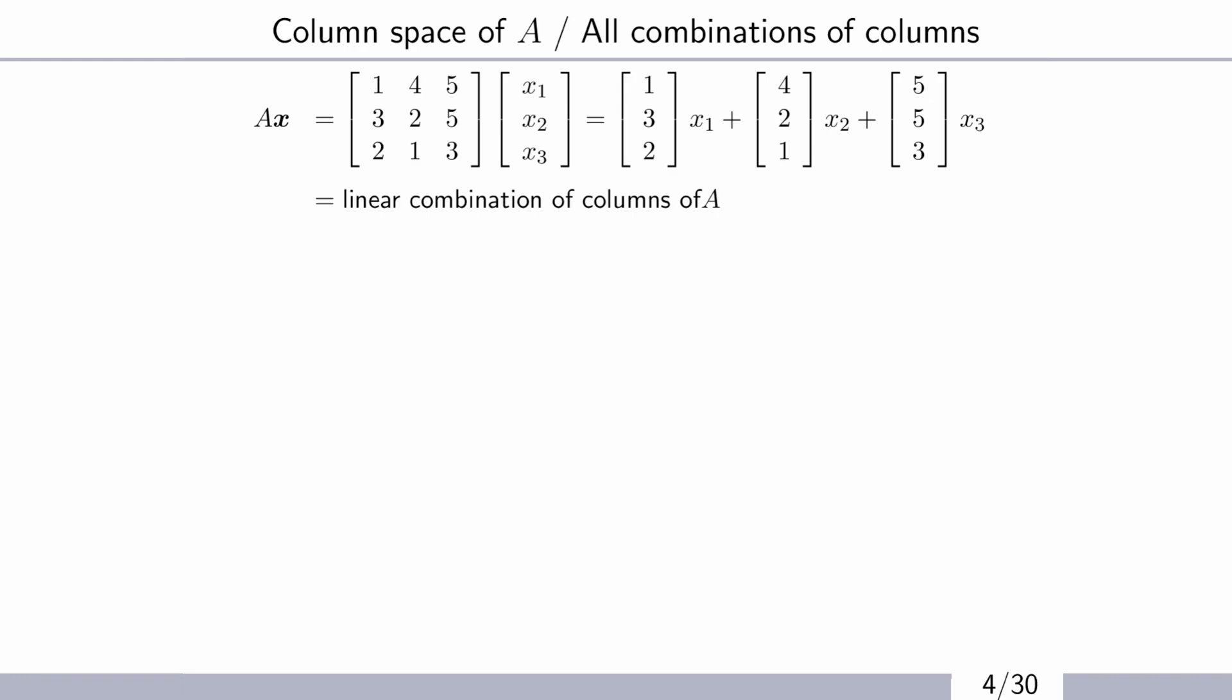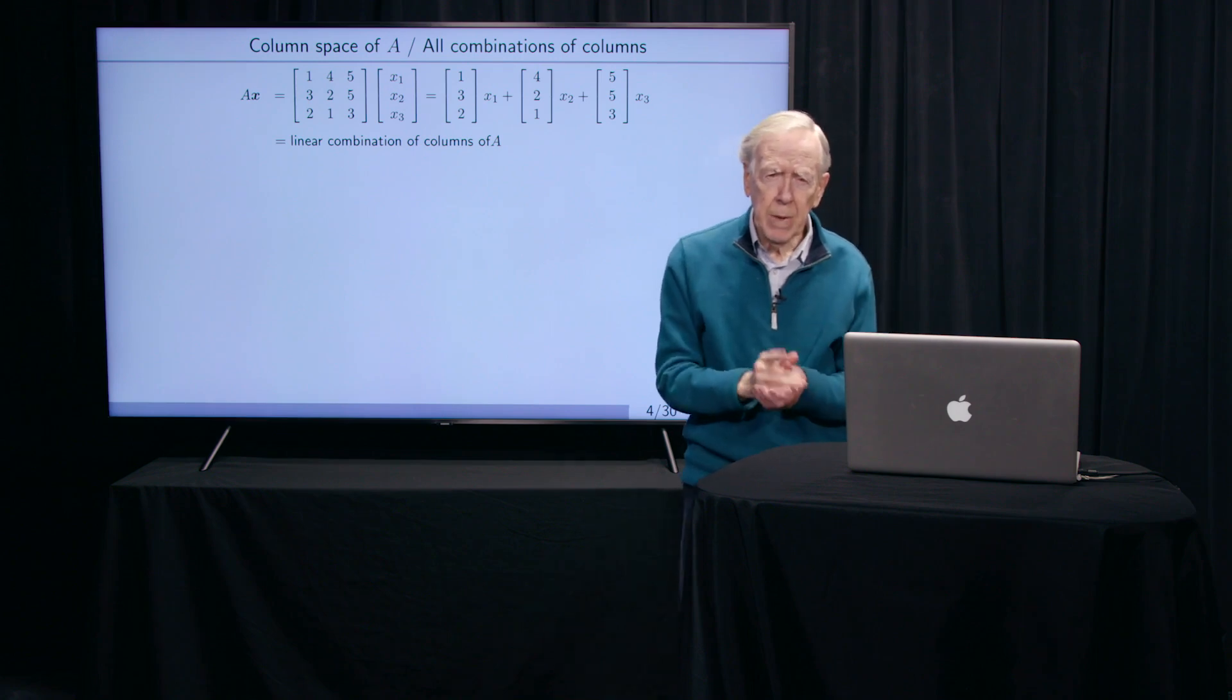And the way I like to multiply them is to take the columns of A. That's what I'm focusing on, columns of A. There they are, 1, 2, and 3. I multiply them by those three numbers, x1, x2, x3. And I add. And that's called a linear combination. Linear because nothing is squared or cubed or anything. And combination because I'm putting them together, adding them together.